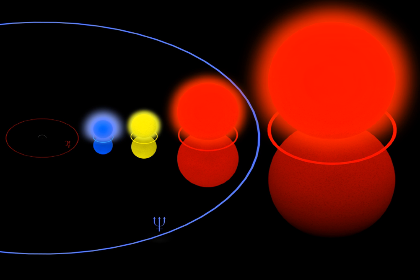In 1956, the astronomers Feast and Thackeray used the term 'super supergiant' for stars with an absolute magnitude brighter than Mv equals minus 7. Mbol will be larger for very cool and very hot stars — for example, at least minus 9.7 for a B0 hypergiant.